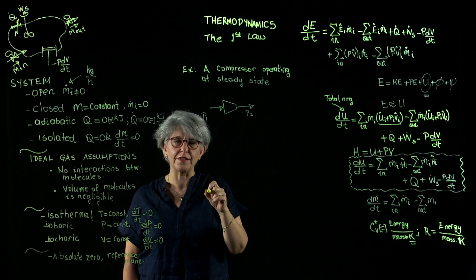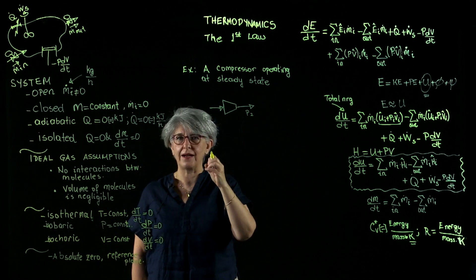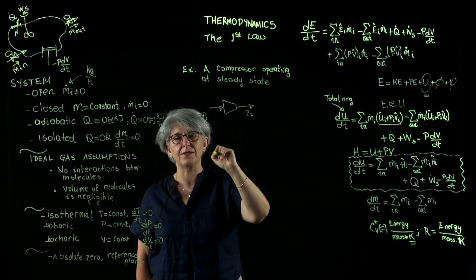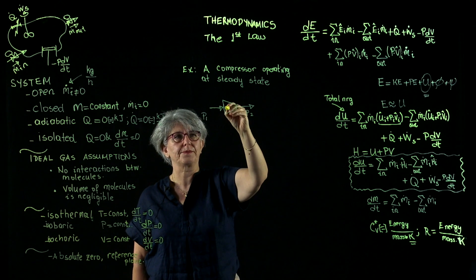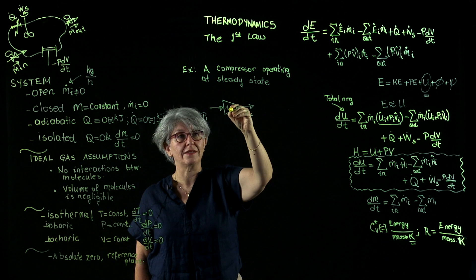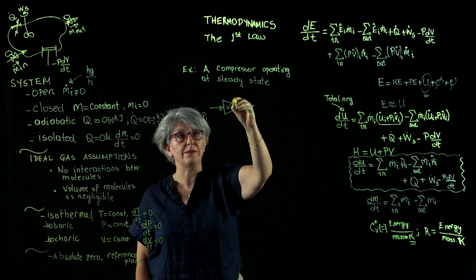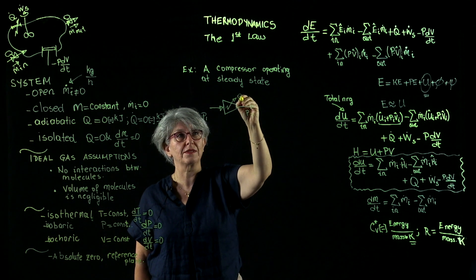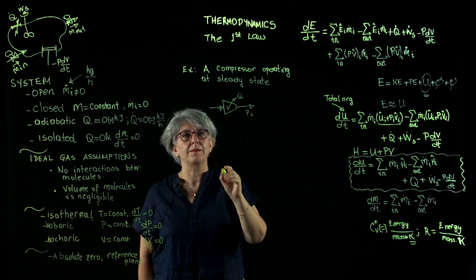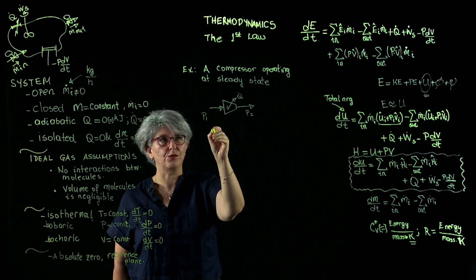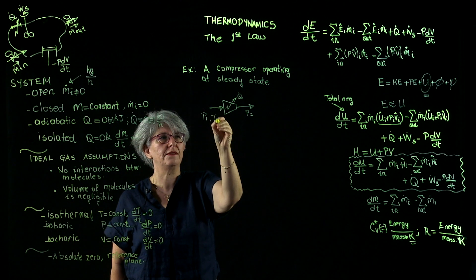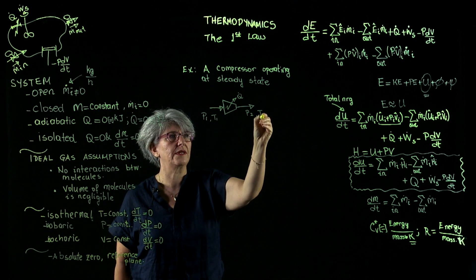For the sake of discussion, we are going to have an isothermal compressor. In order to keep the gas isothermal, we have to exchange heat, but the temperature is going to remain constant — this is going to be T1 at both inlet and outlet.